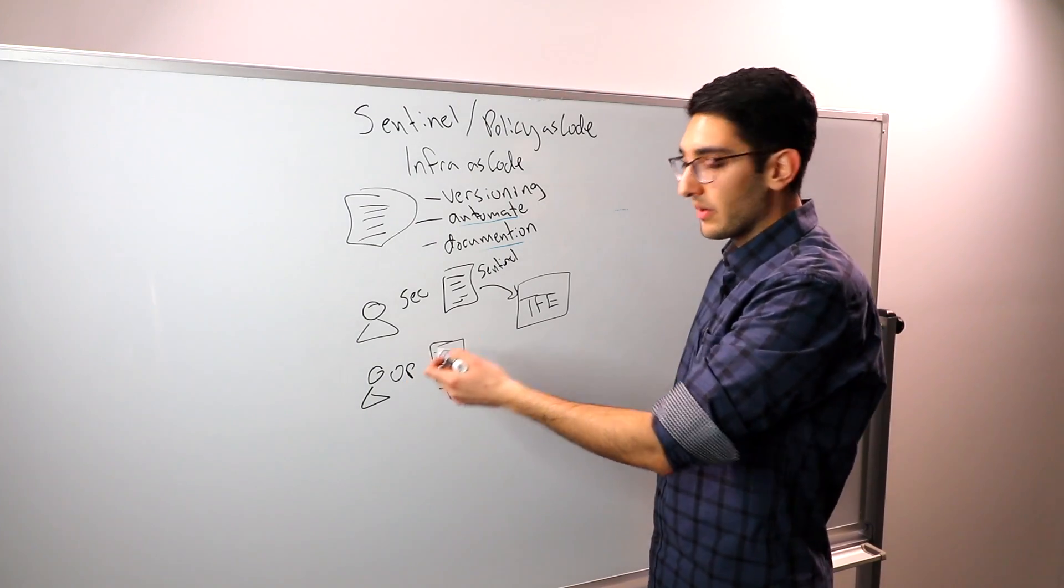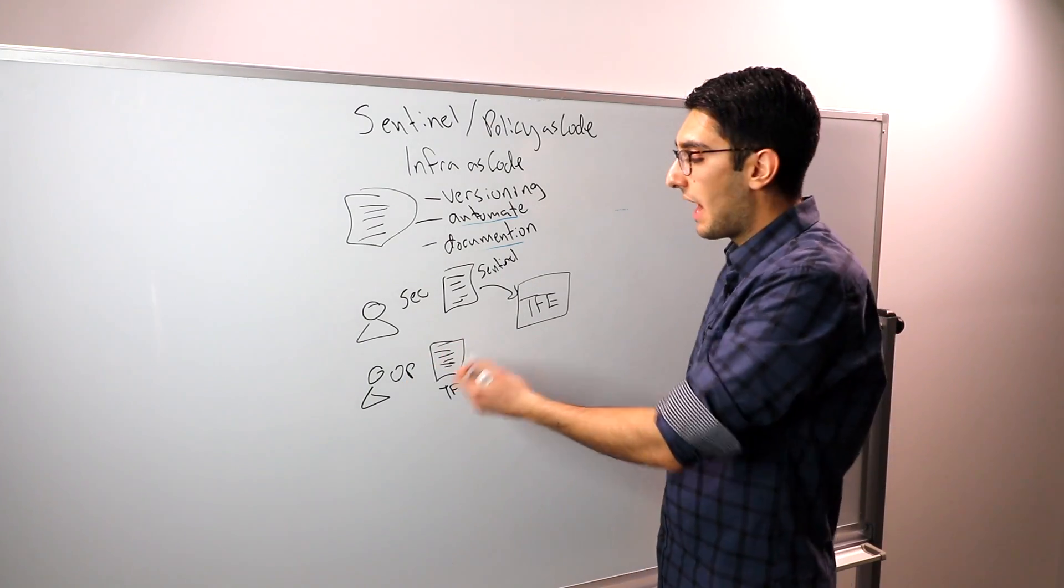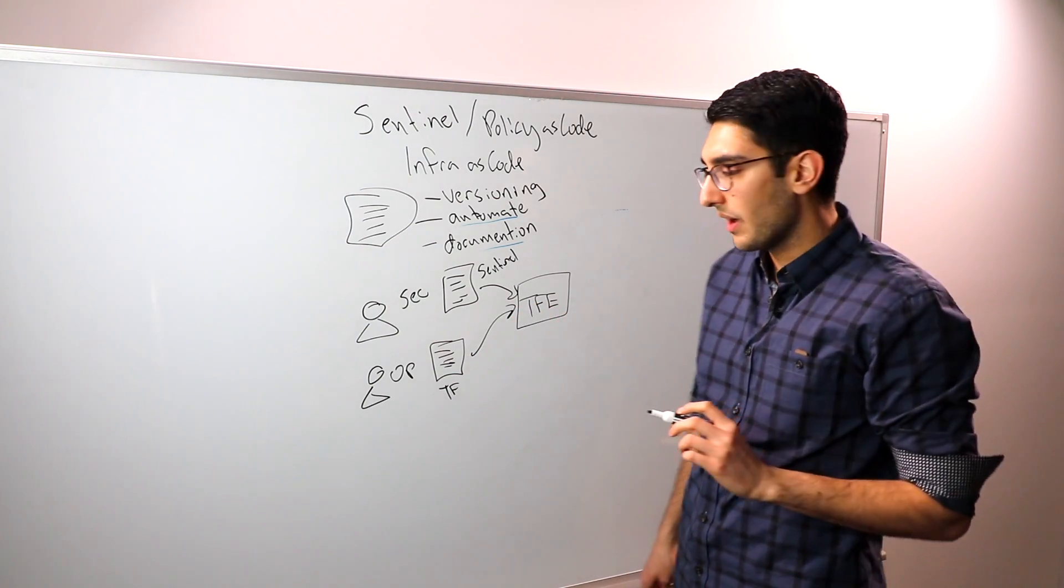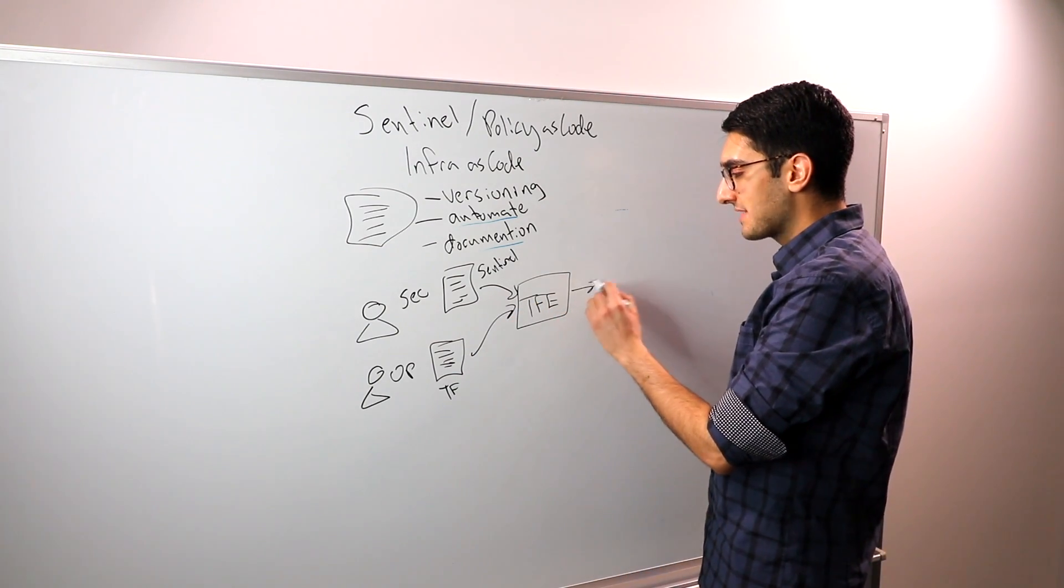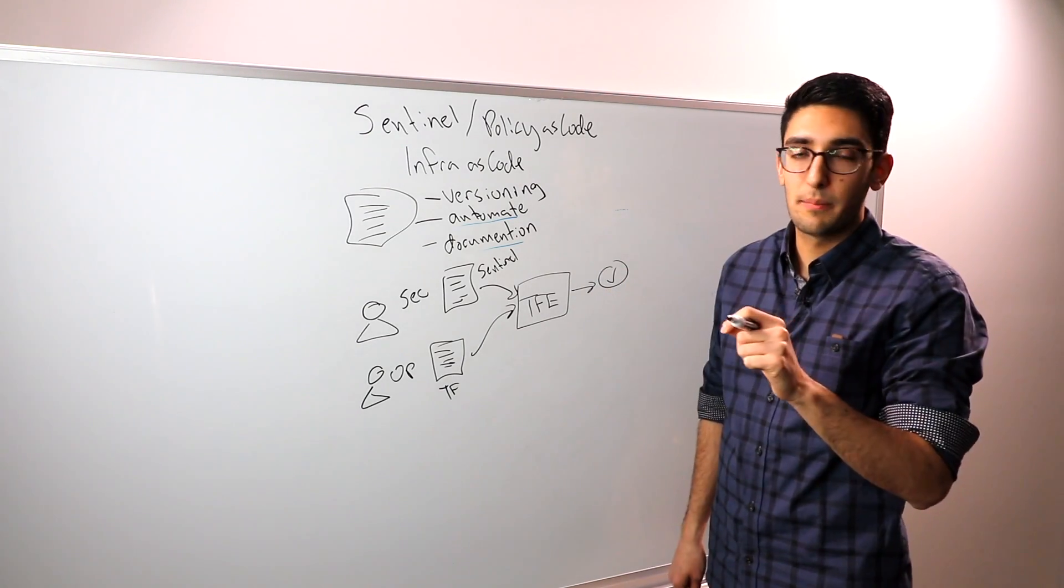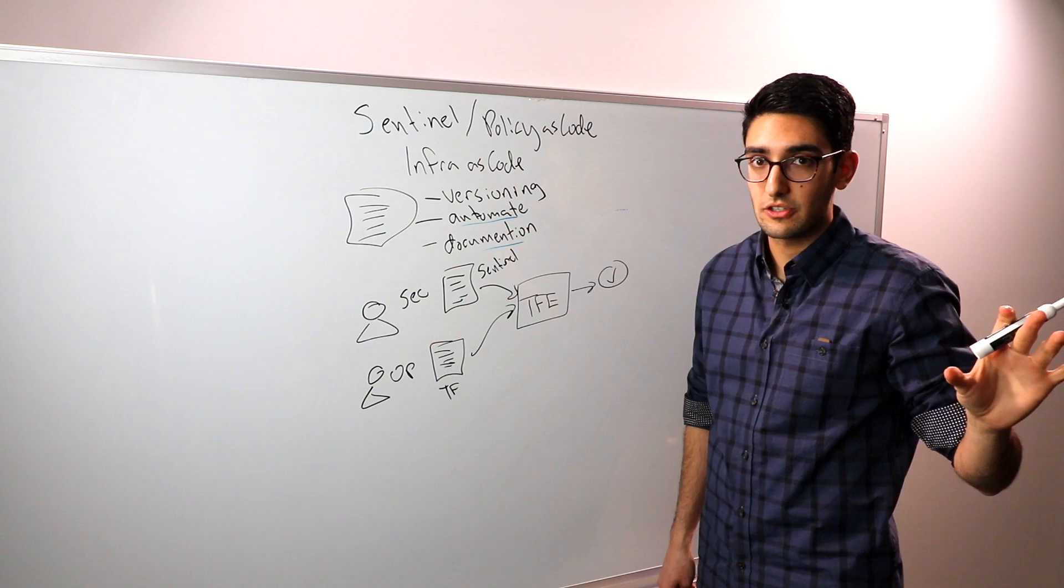Now, as an operator, I still have the self-service I want. I can write Terraform configuration for a new service I want to deploy. This can be submitted to Terraform Enterprise. And as long as my checks pass and I'm not in violation of any of the policies, I'm allowed to push apply and let Terraform go out and build this infrastructure.